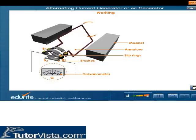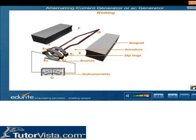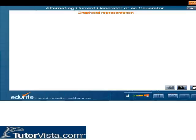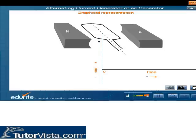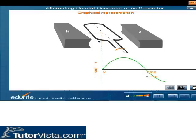The direction of the induced EMF reverses after every half rotation of the coil. Let us now try to understand the alternating nature of the EMF by plotting a graph. The graph shows the sinusoidal nature of the induced EMF.